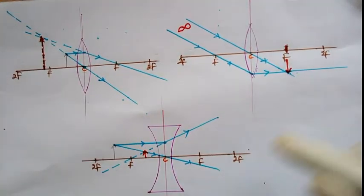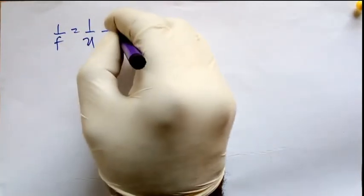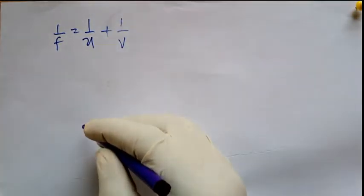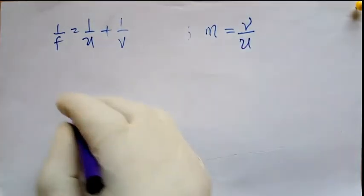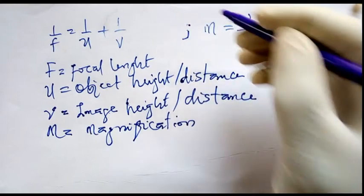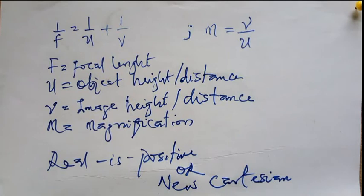Two formulas will be needed to solve general problems under lenses. The first is 1/F = 1/U + 1/V, while the second is M = V/U. You don't need to worry about the sign convention — real is positive, and the real image is on the right-hand side. All virtual images will give you a negative, and all real images will give you a positive. Please do practice.